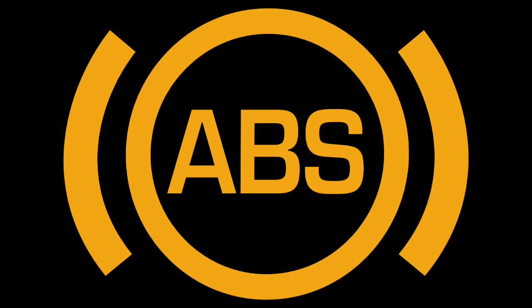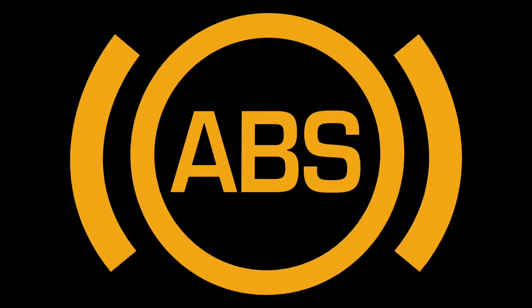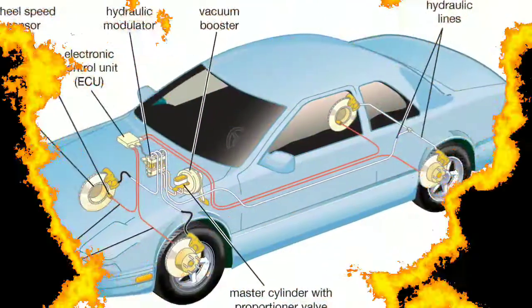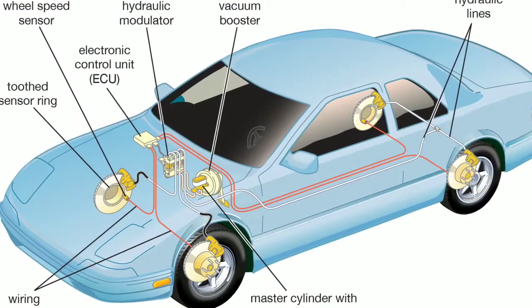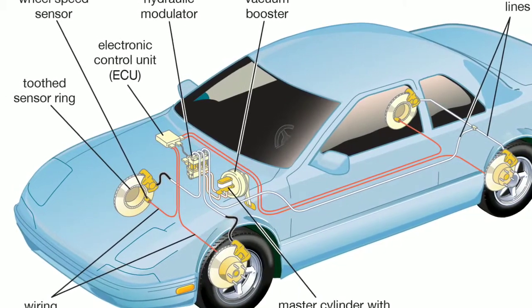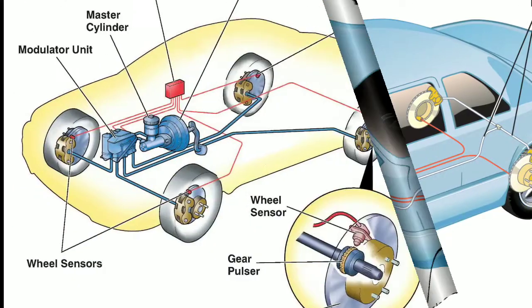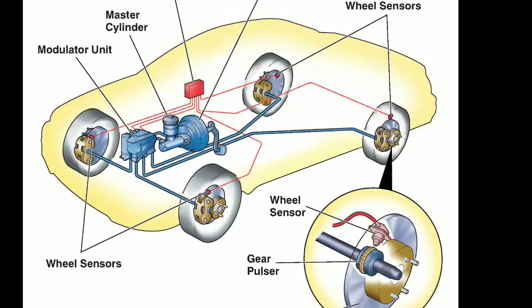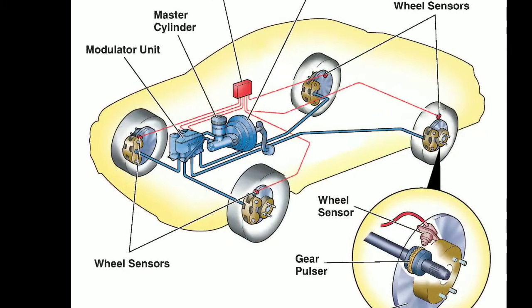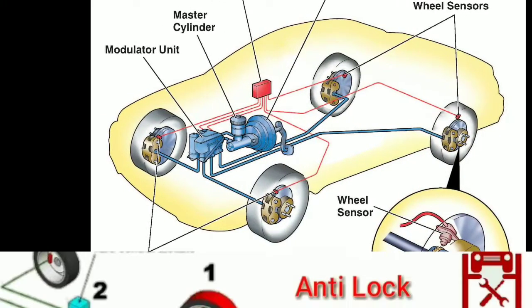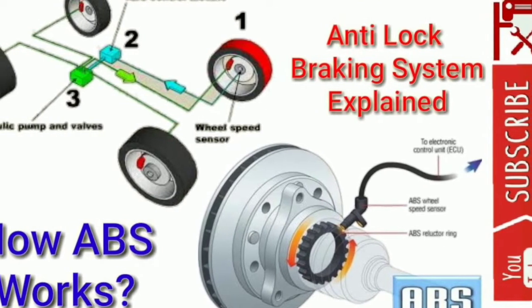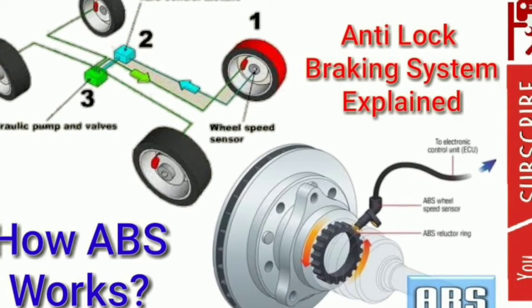ABS brake malfunctions are generally caused by looseness and disconnection of connections between parts. Another reason is that the ABS module is damaged, which makes the issue more serious. The ABS module cannot be repaired — it needs to be completely replaced when it breaks down. Whatever the reason for your malfunction, when you go to the service, you should not neglect to have the electrical connections checked and to have voltage and resistance checks performed.